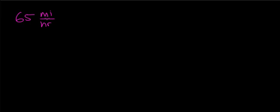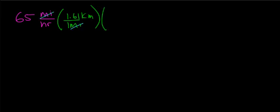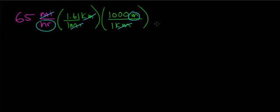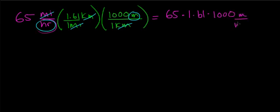The first step is to convert miles over to units of meters. I'll multiply by my first conversion factor: one mile equals 1.61 kilometers, so miles cancel and I'm left with kilometers. I then use the fact that one kilometer equals 1,000 meters, so kilometers cancel and I'm left with meters per hour. This gives 65 × 1.61 × 1,000, which equals 104,650 meters per hour. That completes the length conversion.